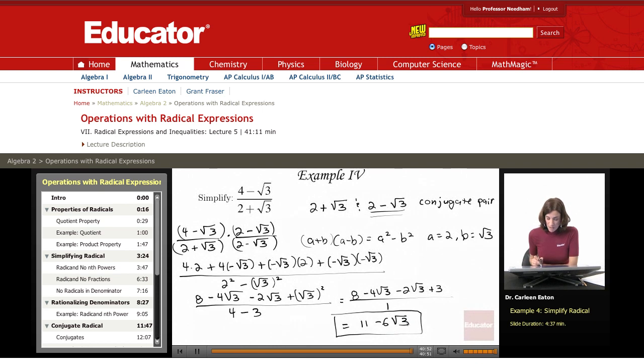And this is now in simplest form because there are no radicals in the denominator. There are no nth powers in this radicand, so no perfect squares in this case. And no fractions under the radical sign. And the index is the smallest power that it can be. So that concludes this session of Educator.com. Thanks for visiting.